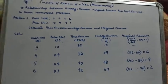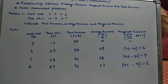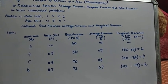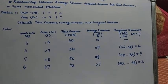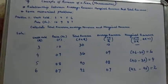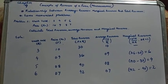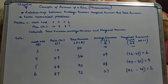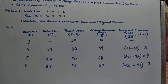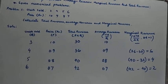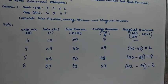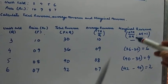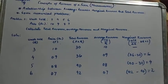That is one example of solving numerical problems regarding total revenue, average revenue, and marginal revenue. From this table, you can see that price and average revenue are the same, but marginal revenue is different in this case.